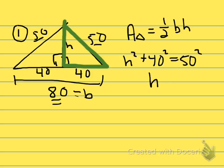We'll go h squared plus 40 squared equals 50 squared. That's going to be h squared is equal to 50 squared minus 40 squared is going to leave us with 900. I'll let you verify that.